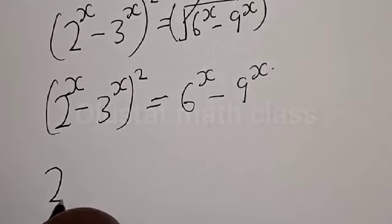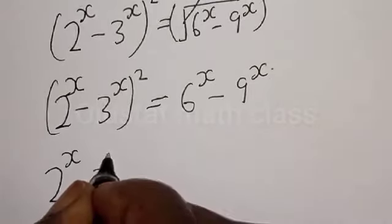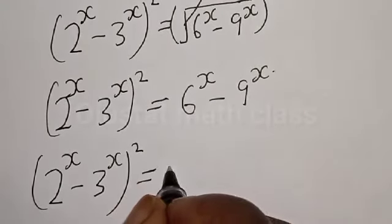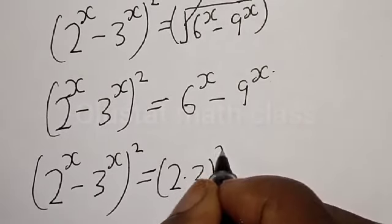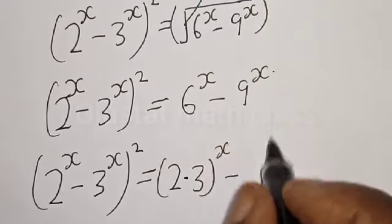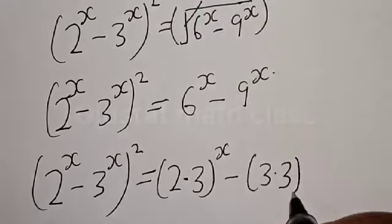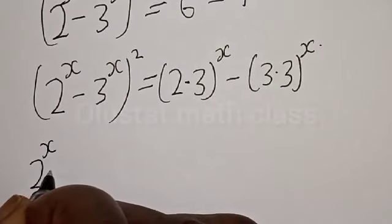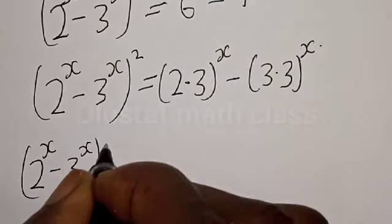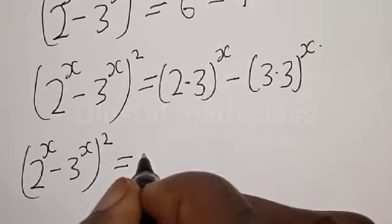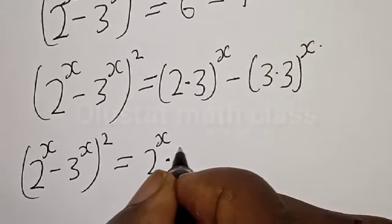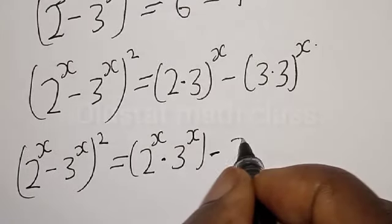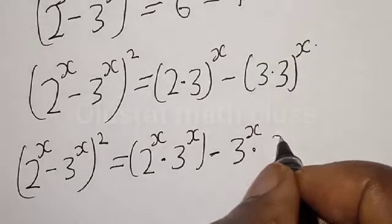Then we have 2 raised to the power x minus 3 raised to the power x, all squared, equal to: 6 raised to the power x can be expressed as 2 multiplied by 3 raised to the power x, minus 9 raised to the power x, which is the same as 3 multiplied by 3 raised to the power x.